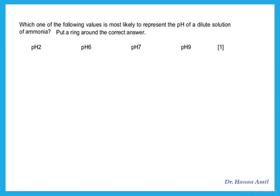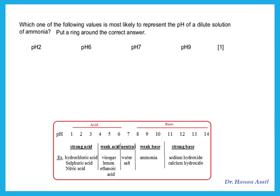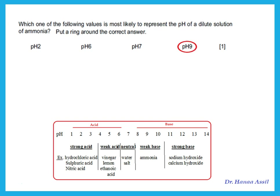One type of question asks: which value is most likely to represent the pH of a dilute solution of ammonia? The pH scale is 1 to 14 — anything less than 7 is acidic, anything more than 7 is a base. Ammonia is a weak base, so it will have a pH of 8, 9, or 10. Out of the choices, pH 9 could be the pH of ammonia.